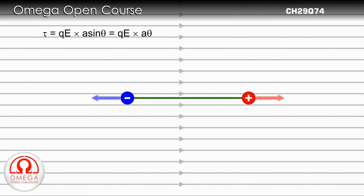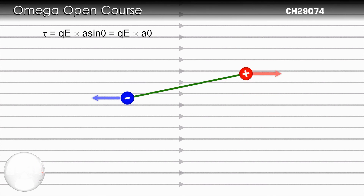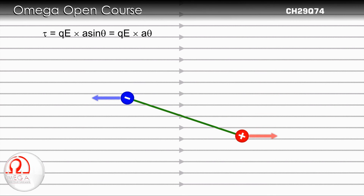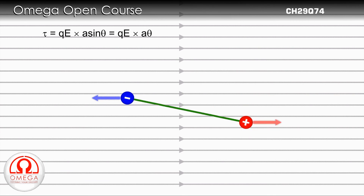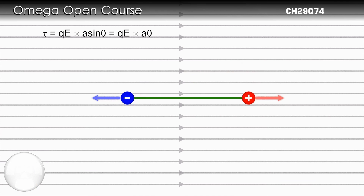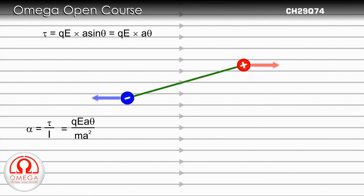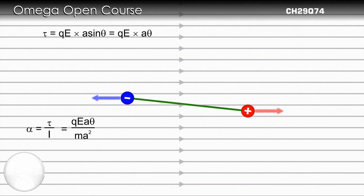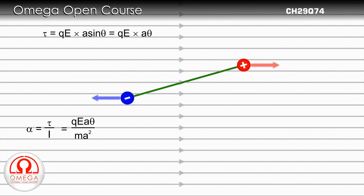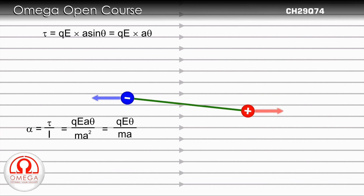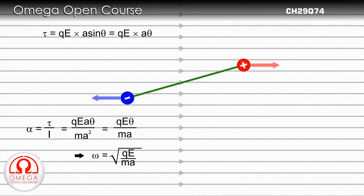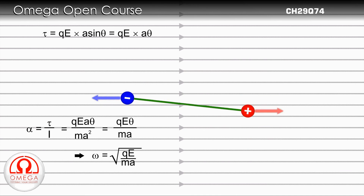Since the negative charge is at the axis itself, its moment of inertia is zero. The moment of inertia of the positively charged particle is Ma squared. Thus the restoring angular acceleration is QE times A theta divided by Ma squared, which simplifies to QE theta divided by Ma. Therefore the angular frequency of the SHM is the square root of QE divided by Ma.